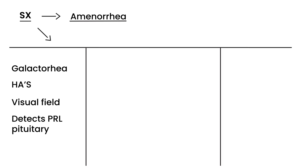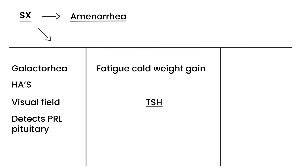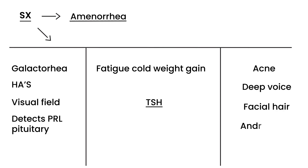If the person comes in and in addition to amenorrhea her symptoms are fatigue, feeling cold, and weight gain, this might lead you to think of a thyroid disorder — so TSH is something you'd want to check. Or if she comes in with amenorrhea plus acne, a deep voice, and facial hair, this might lead you to think of excess androgens causing the amenorrhea.